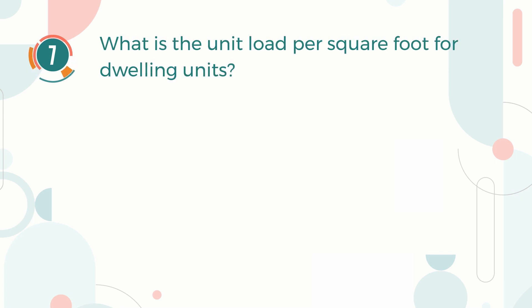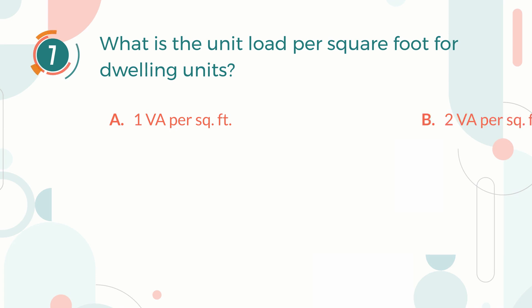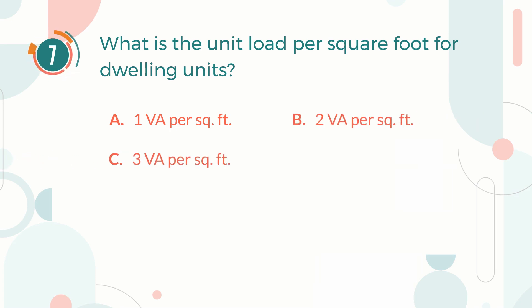Number 7. What is the unit load per square foot for dwelling units? A. 1 volt-ampere per square foot. B. 2 volt-amperes per square foot. C. 3 volt-amperes per square foot. D. 4 volt-amperes per square foot.